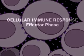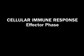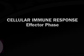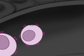The cloned T cells circulate in the blood and lymph. In the effector phase of the cellular immune response, activated cytotoxic T cells destroy virus-infected cells wherever they encounter them.